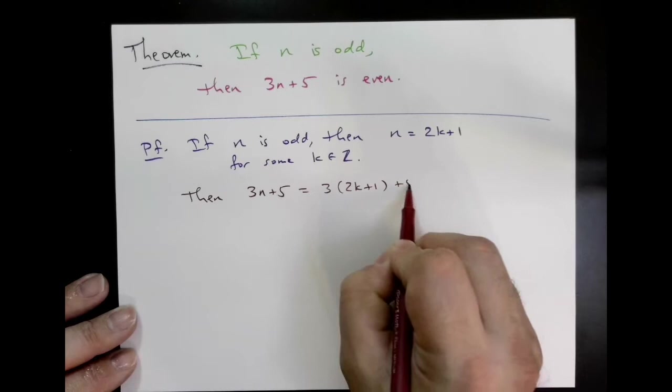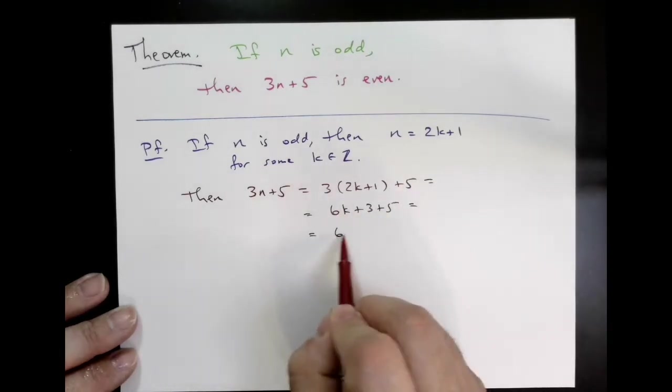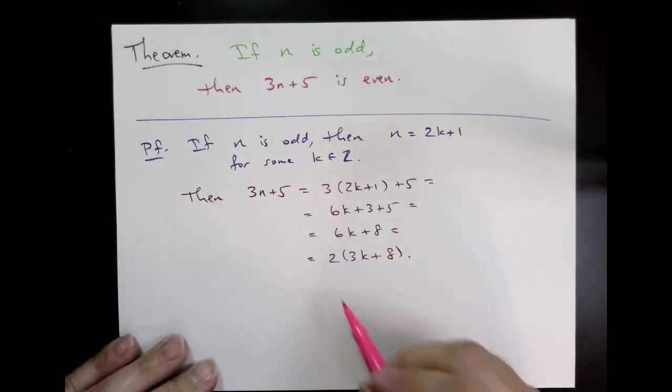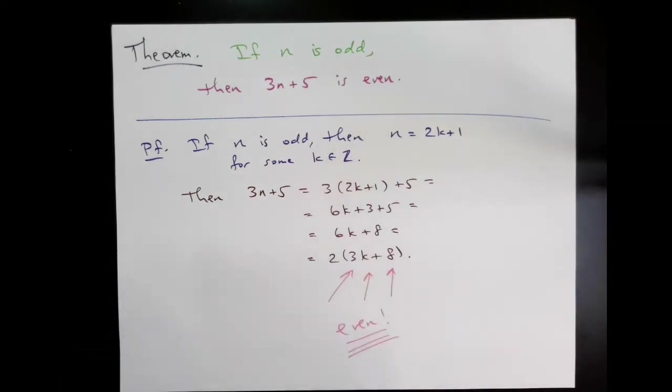Notice that everything here is divisible by 2 you could pull out a 2. So that's 2 times 3k plus 4. So that must be even since it's twice an integer. Okay so all we did was we just wrote down what the definitions mean, did some logic, and then reinterpreted the definitions. That's a very common method of proof.